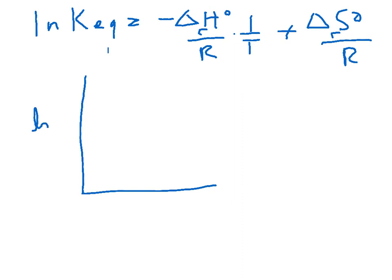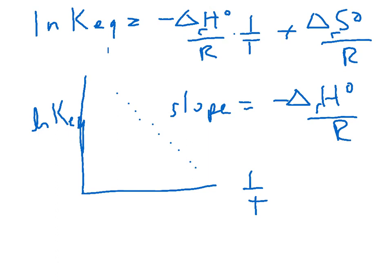So this implies we can just graph that, right? We can measure the equilibrium constant at a bunch of different temperatures and plot it. And so for instance, if we got data that looked like this, we can say, okay, the slope is equal to negative delta H over R. Let's think about this for a second.